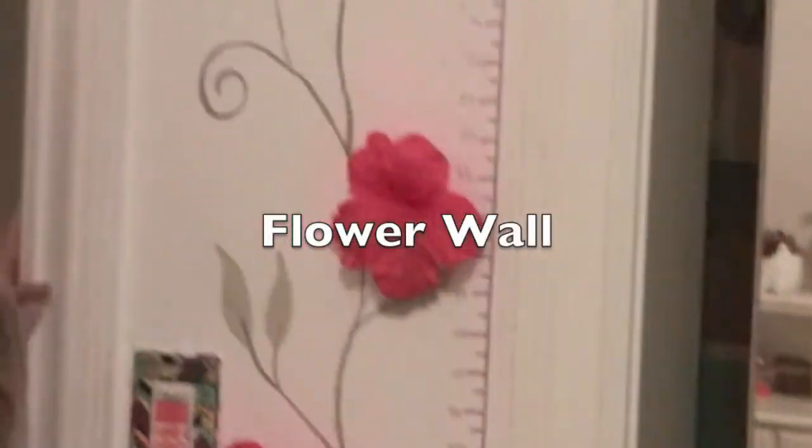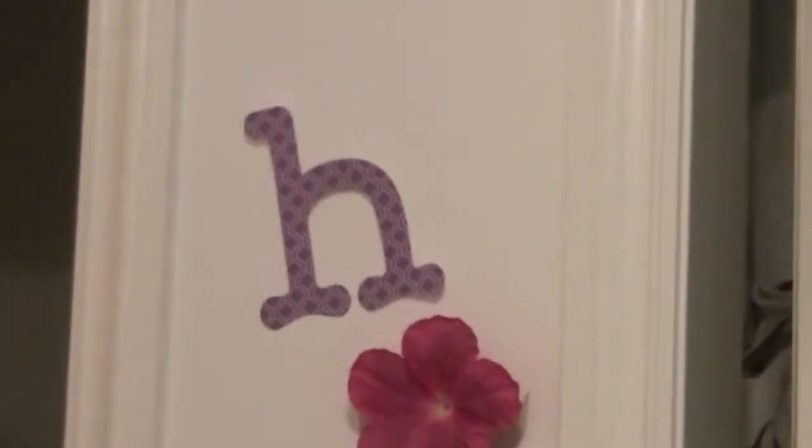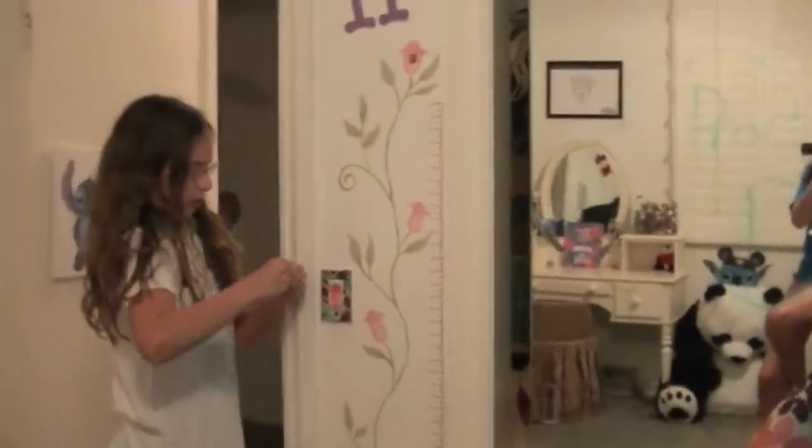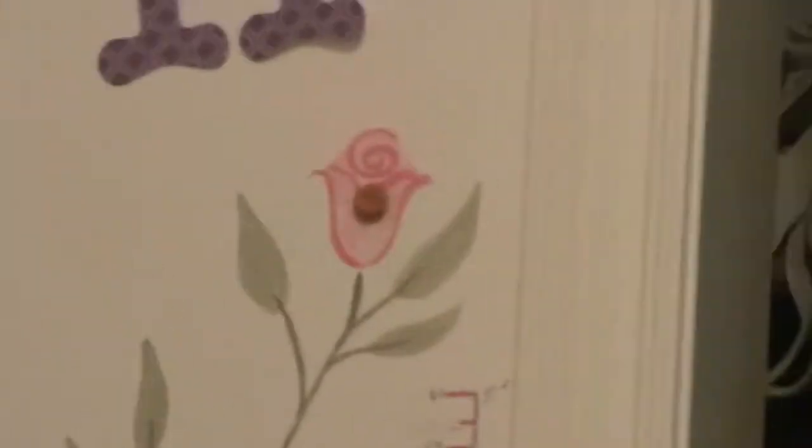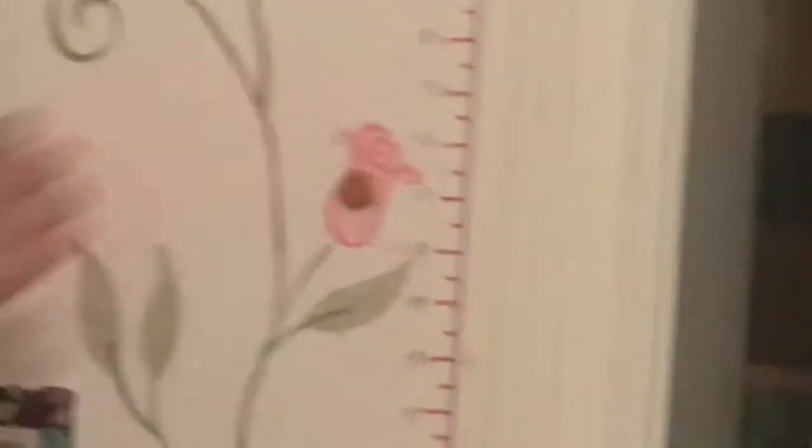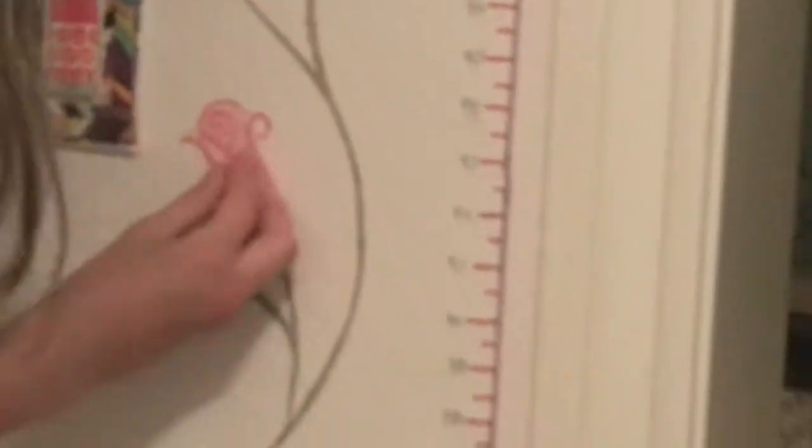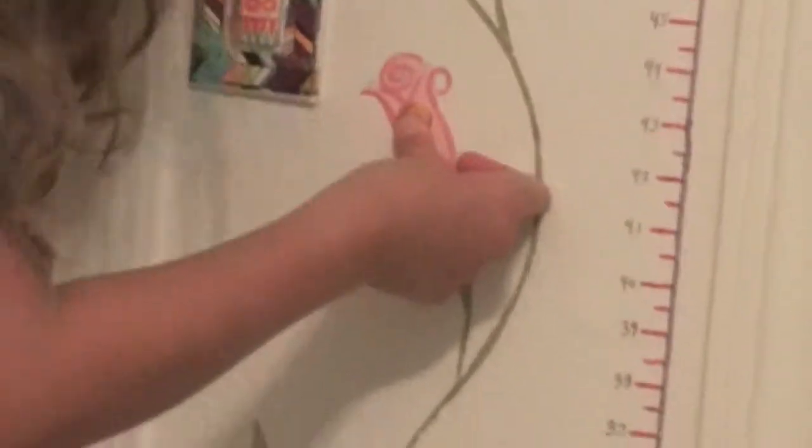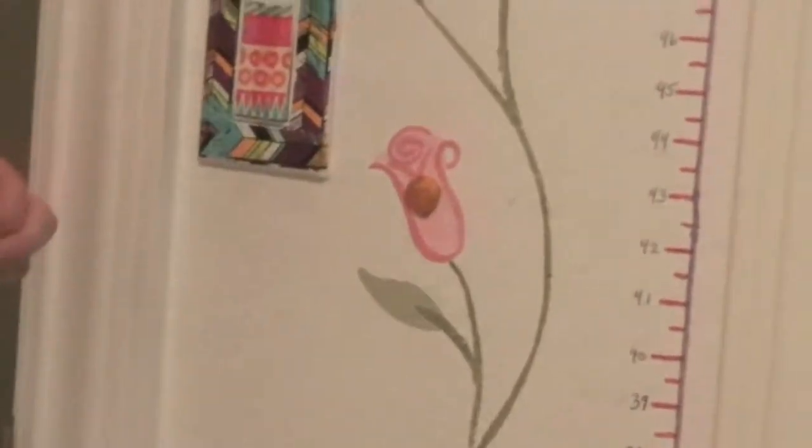So the next thing is a flower wall. And you see all the leaves and stuff, I had that painted on for a really long time. But for this craft, you're going to need poster putty, which I bought from Michael's, and fake flowers, which I also bought from Michael's. And you just put circles of poster putty onto where you want your flowers, and then you just stick the flowers into the poster putty. And that's pretty much it. It's really cute, and it totally just adds a pop of color into your room.